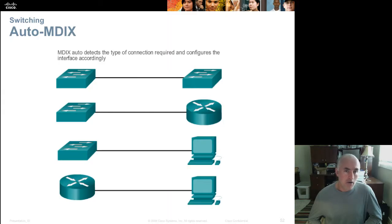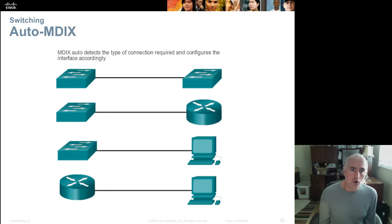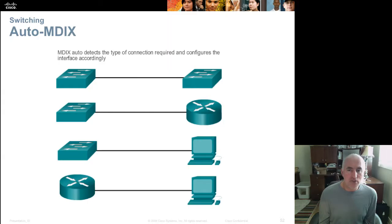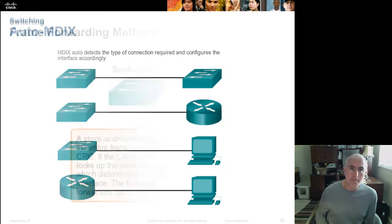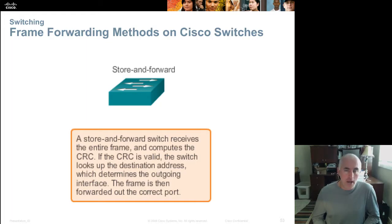Switches support auto-MDIX on gigabit ports. On gigabit Ethernet ports, you can safely use a straight-through Ethernet cable for everything. On 10 and 100 Mbps ports without auto-MDIX, you'd have to use the correct cabling — switch-to-switch and router-to-PC connections would require a crossover cable. Auto-MDIX automatically rewires the cable in software as needed, essentially eliminating the need for crossover cables.